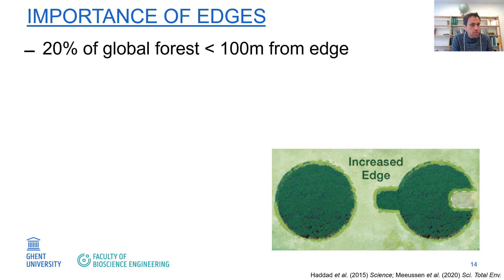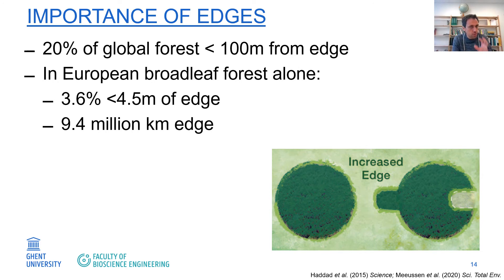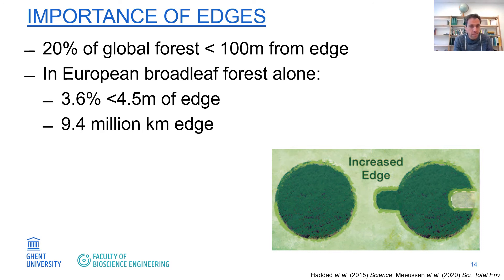So far I talked especially about forest interiors, but a lot of global forest cover is situated not far from the edge. On average, 20% of global forest cover is less than 100 meters from the edge, and in Europe the situation is even worse — 4% of all forest cover is less than 4.5 meters from an edge, meaning there is no less than 9 million kilometers of forest edge across Europe.